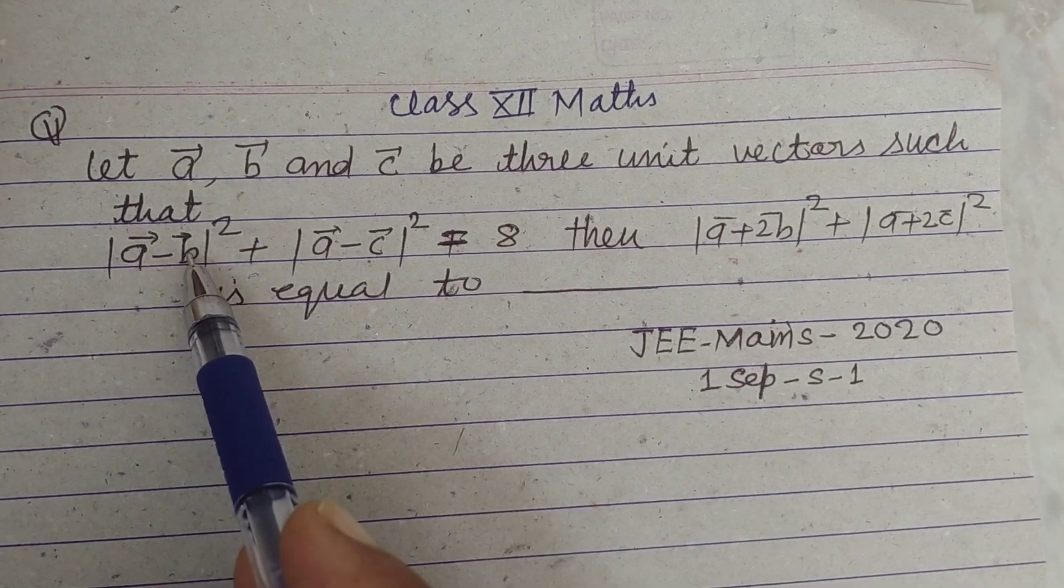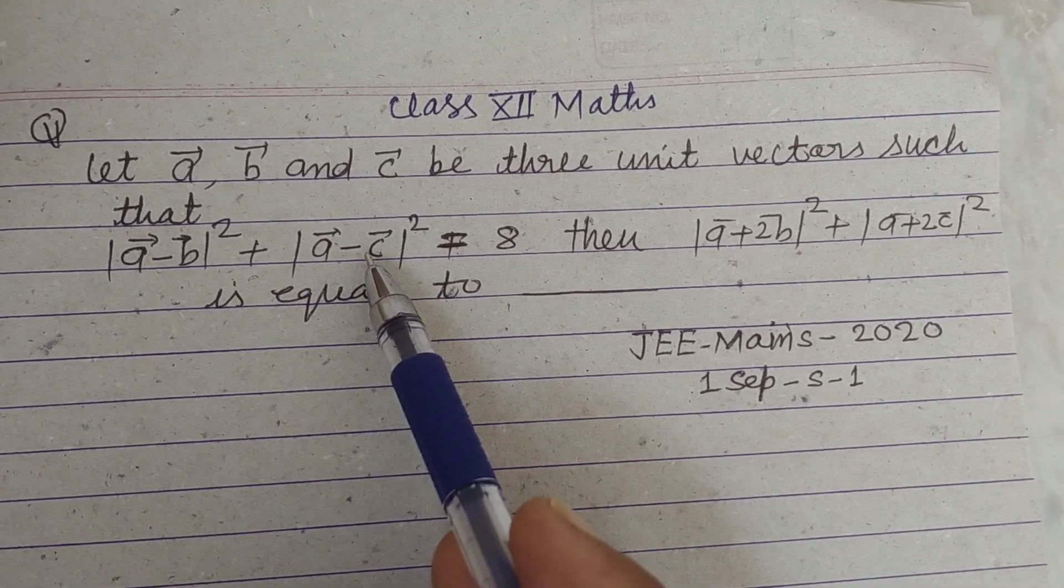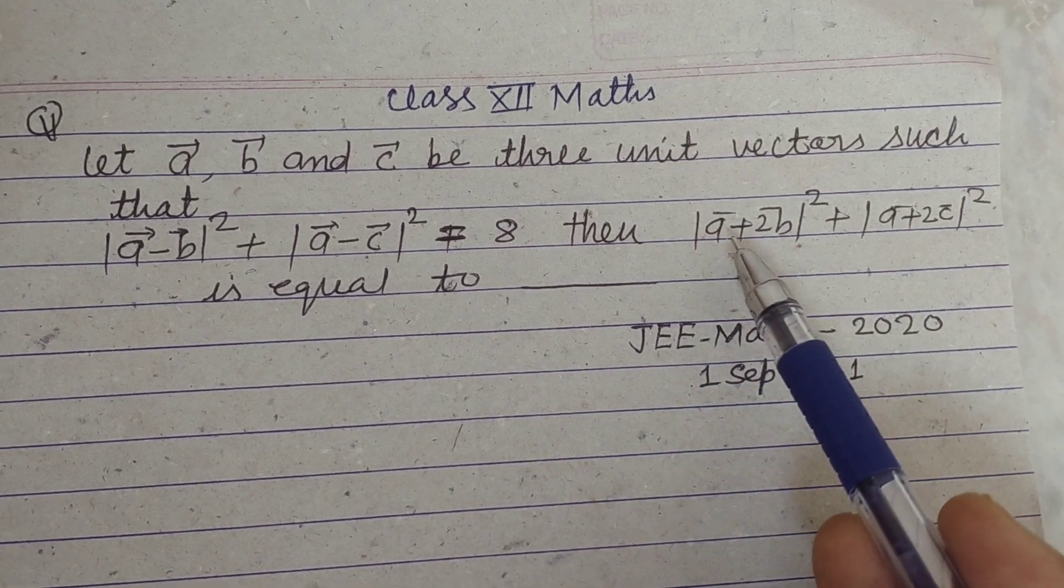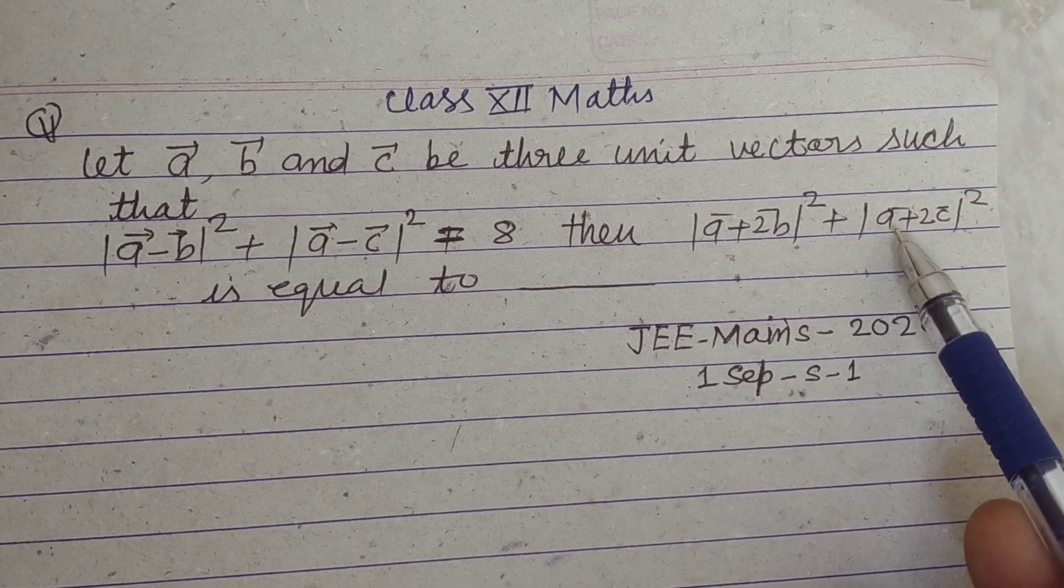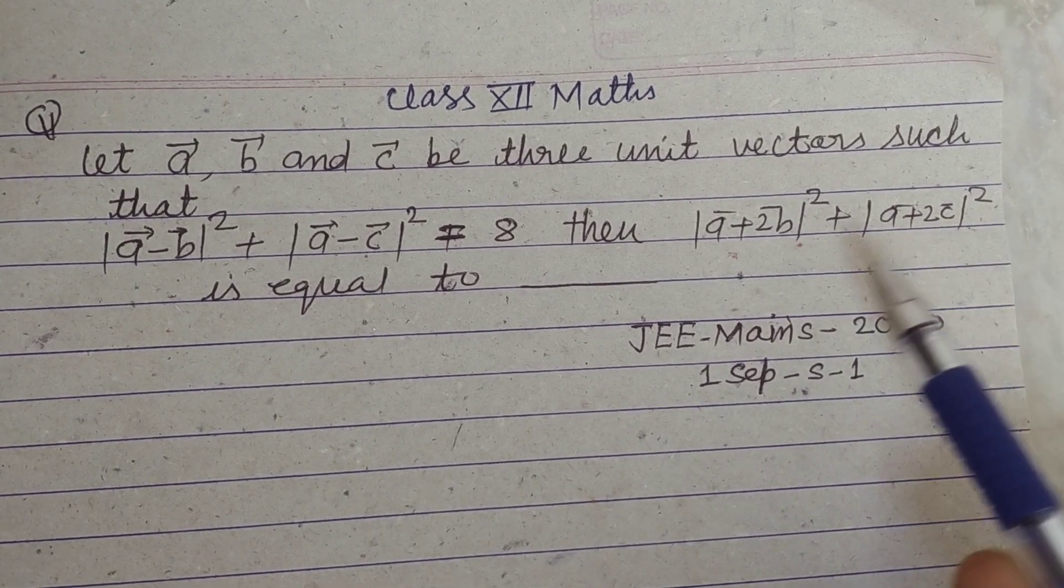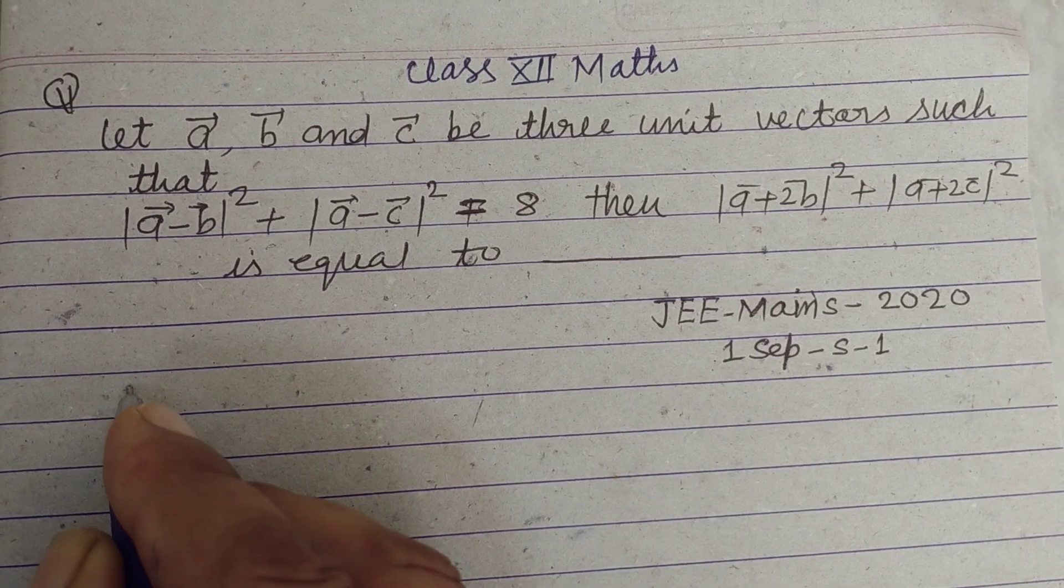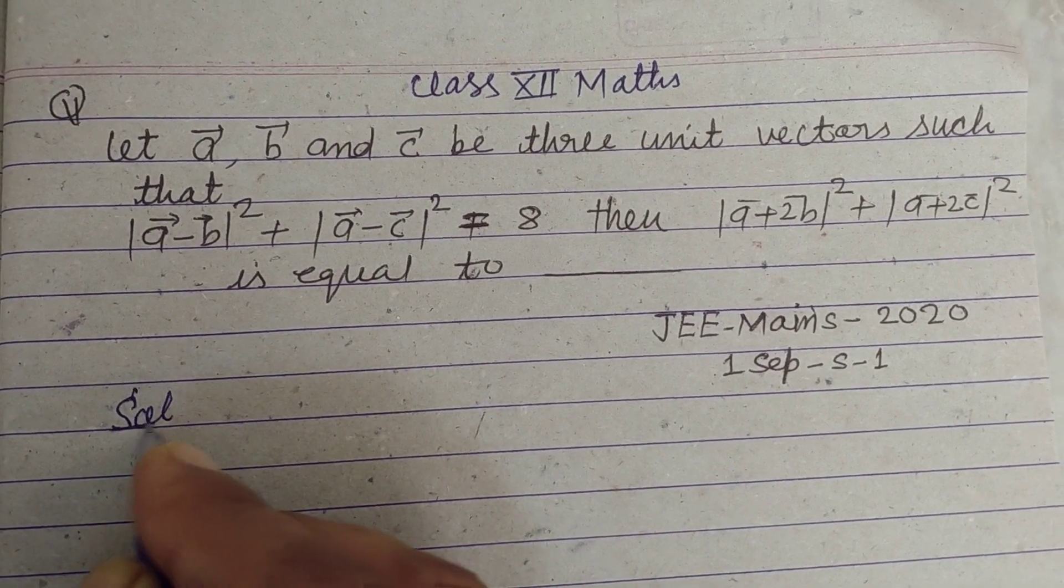mod of a minus b whole square plus mod of a minus c whole square equal to 8, then mod of a plus 2b whole square plus mod of a plus 2c whole square is equal to